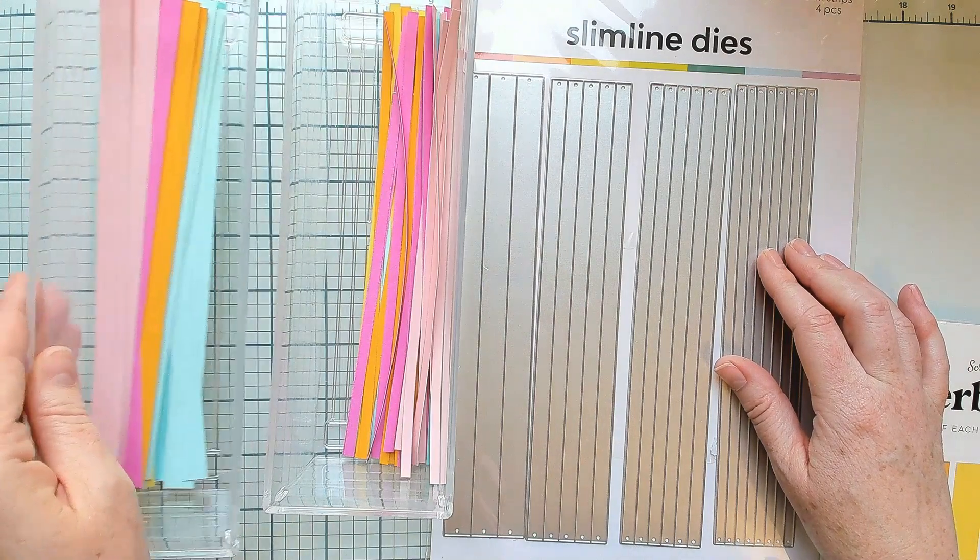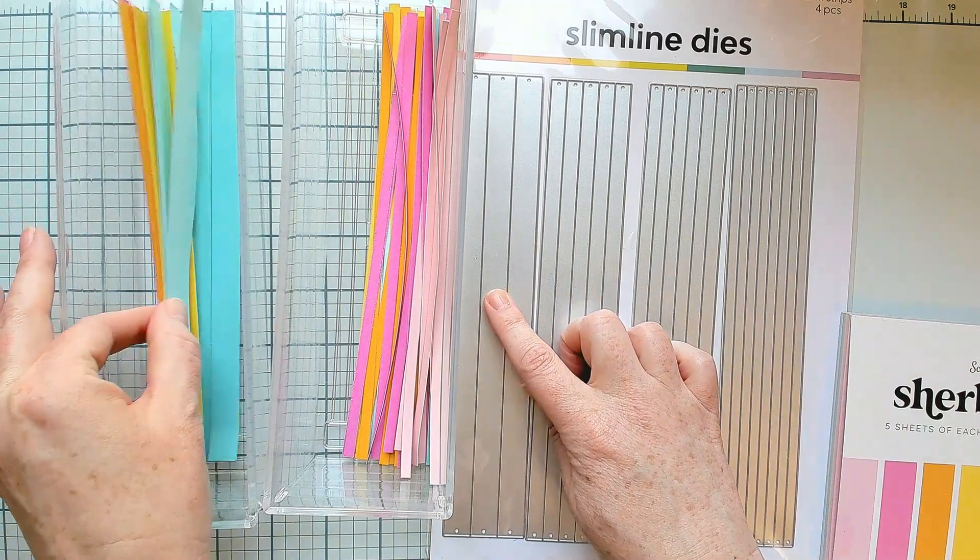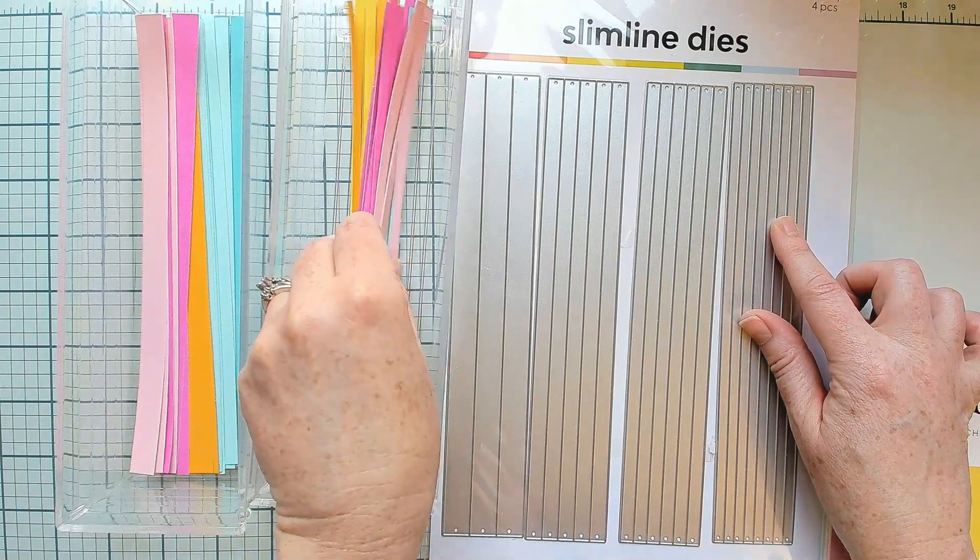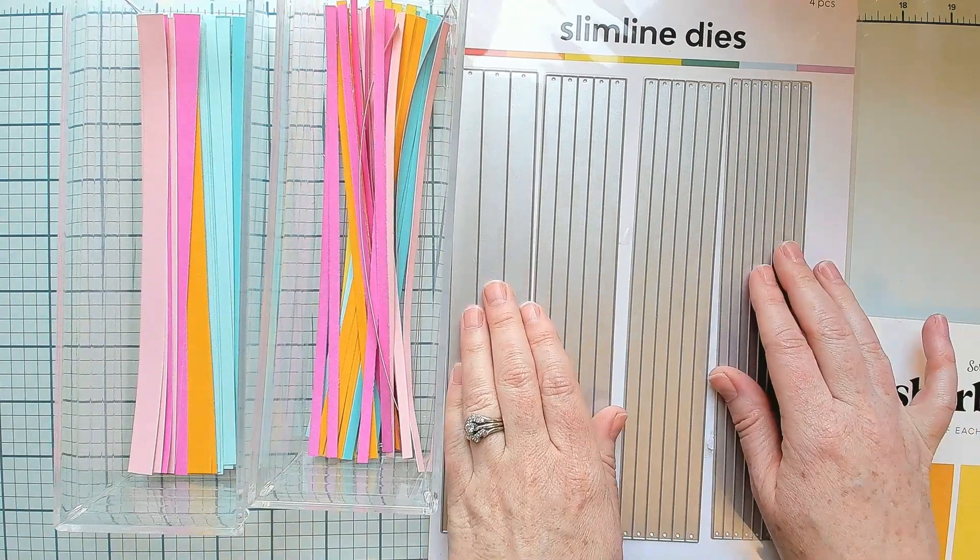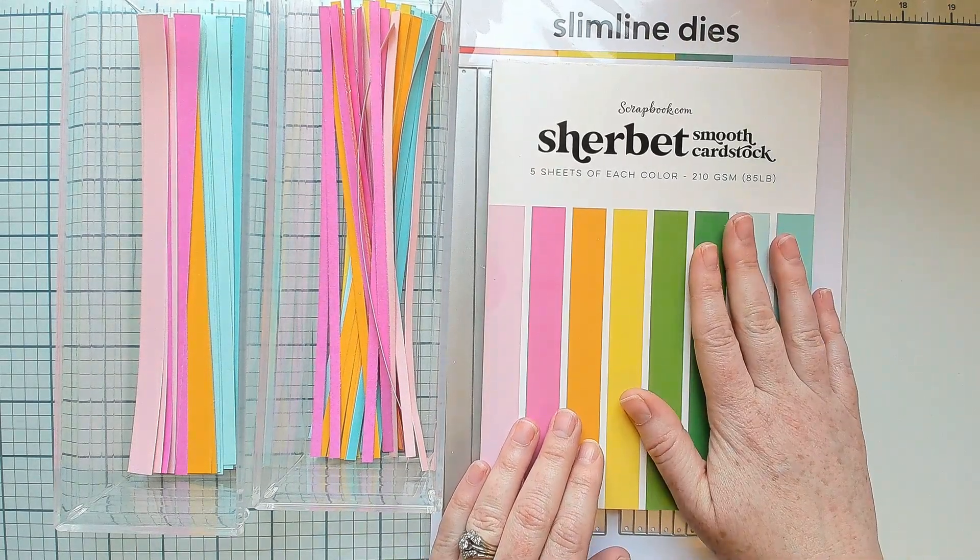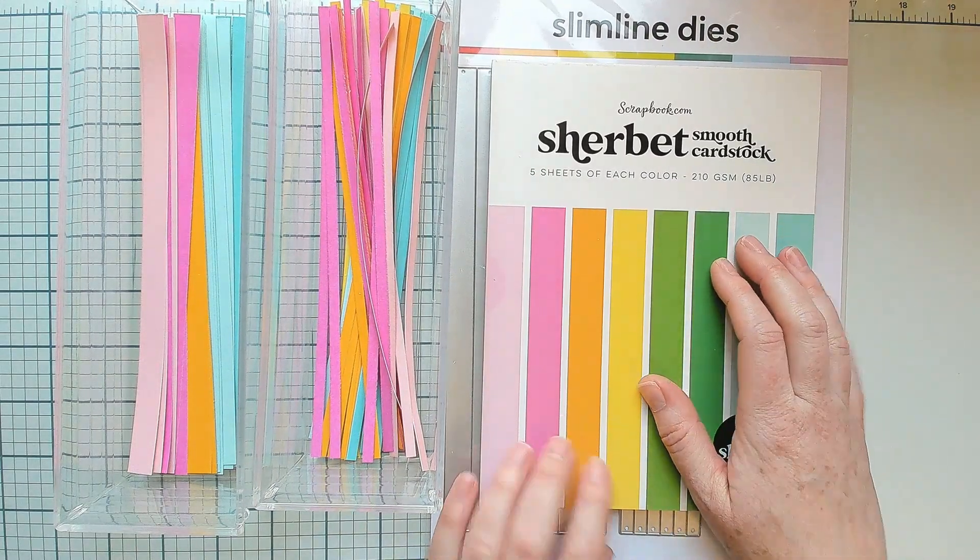I'm doing each color in a half inch, which is the larger format, and then one eighth inch, which is the thinner. Your choice—you can use a die or a paper trimmer and just cut those from the sherbet smooth cardstock.